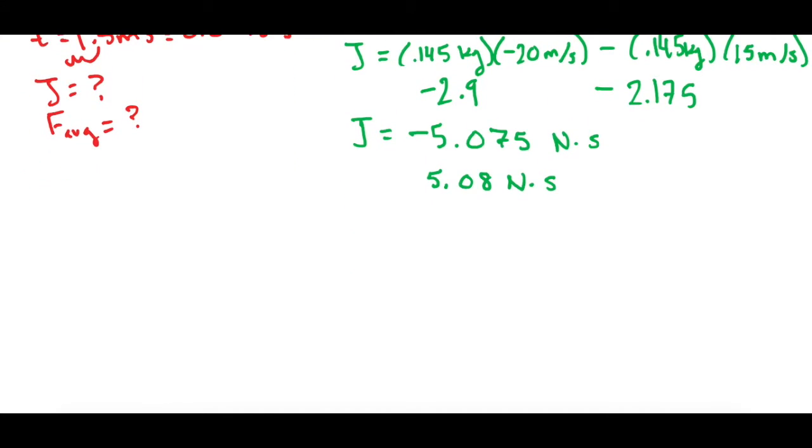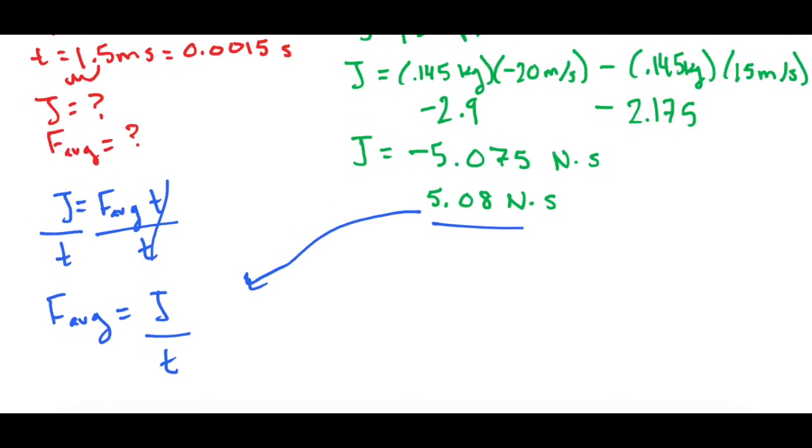So let's rewrite it out. We have J equals the average force times the time. And we want to isolate the average force, so let's divide by time. So now the average force equals J, which we already solved for, divided by the time, which they gave us, 0.0015. Now we just have to plug it in.